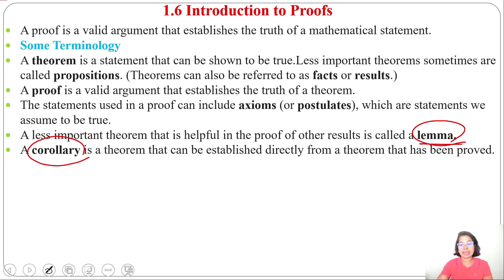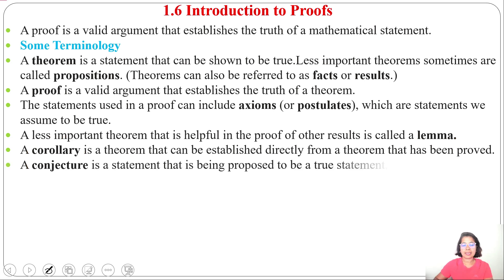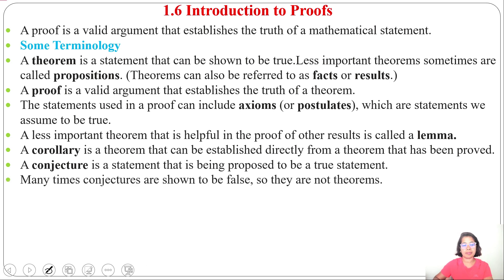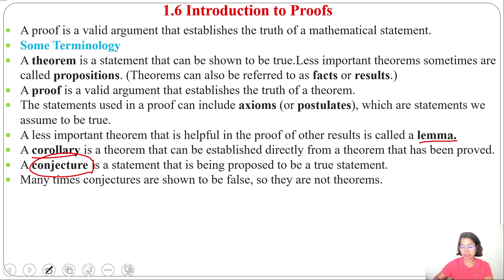Next, a conjecture is a statement that is being proposed to be a true statement, but many times it is false, so they are not theorems. Theorem is true, lemma is true, corollary is true. But a conjecture may be true or may be false.